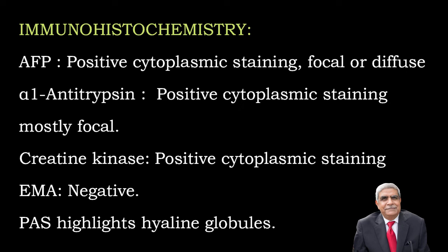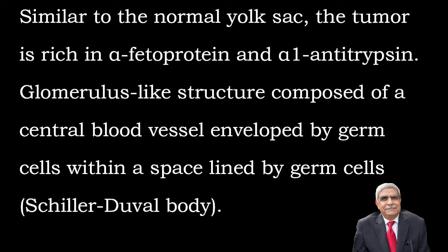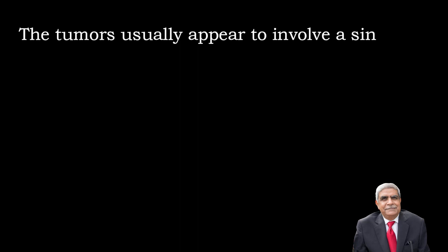EMA is negative. PAS highlights hyaline globules. You must remember two things: one is Schiller-Duval bodies, which is a glomerulus-like structure having a central blood vessel enveloped by germ cells. The other is presence of hyaline droplets which are of alpha-fetoprotein and alpha-1-antitrypsin.